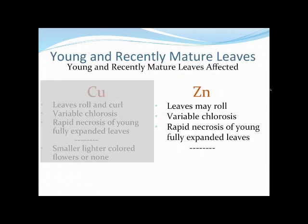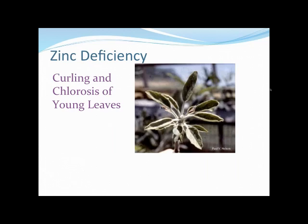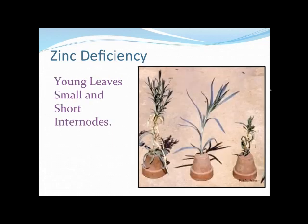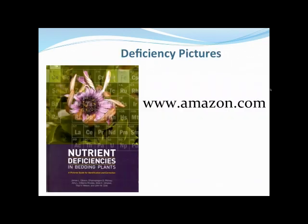Finally, zinc deficiency shows curling chlorosis of the young leaves. People often call this 'mouse ear' — on this apple tree example, the leaves are curled up and do look like a little mouse ear. The most recently matured leaves are the ones affected — the control plant in the middle looks healthy while the two plants on either side, deficient in zinc, show that middle section of recently matured leaves affected. That sums up our dichotomous key of nutrient deficiencies.